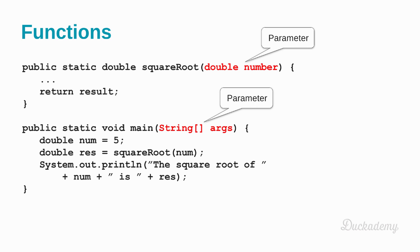The square root has a single parameter, which is a double. This is the number. While the main has a parameter named args. And the type is a string array. And while the square root returns a double, the main returns nothing. This is nothing, the void.